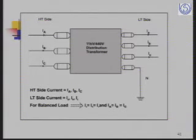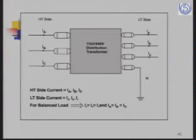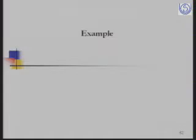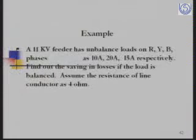If the HT side currents are IA, IB, IC, then IA should be equal to I-small-a in the LT winding, so each phase current should be equal. Now we will discuss why we need to achieve this.